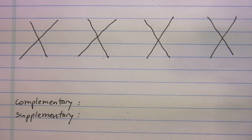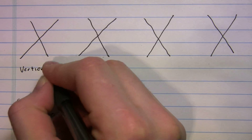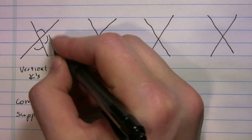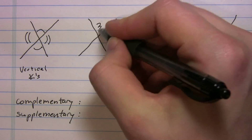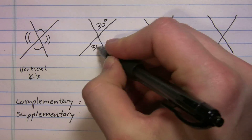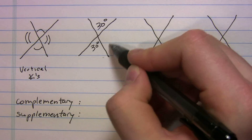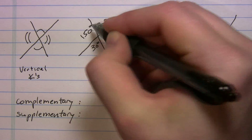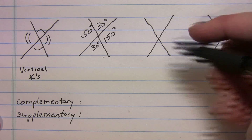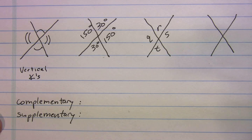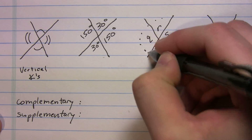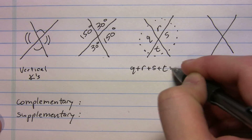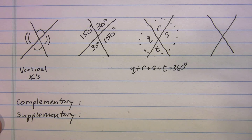Let's talk about vertical angles. On paper this looks like a bunch of X's. If you have two lines that intersect, the angle across from another is equal to it — vertical angles are equal. So if one angle is 30°, the one across from it is also 30°. The adjacent angle has to be 150° since 30 plus 150 equals 180. With variables q, r, s, and t, all the way around the intersection q plus r plus s plus t equals 360 degrees.